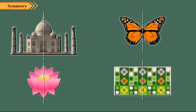Symmetry is a regular balanced arrangement on both sides of a line. If we fold the figure along this line, the two halves exactly match with each other.